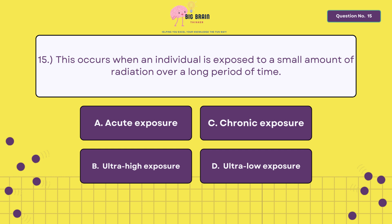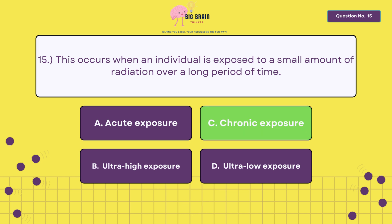Fifteen, this occurs when an individual is exposed to a small amount of radiation over a long period of time. The answer is letter C, chronic exposure.